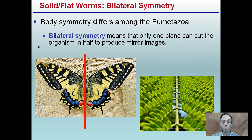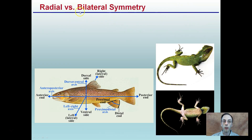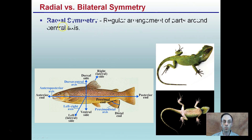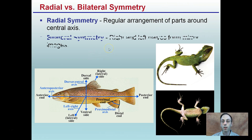Different from some of the organisms we talked about previously, this allows for a greater degree of specialization to occur. Now, radial versus bilateral symmetry: radial symmetry is the regular arrangement of parts around a central axis. With bilateral symmetry, they have distinct right and left halves from the mirror image, which allows us to go into more detail about the animal.